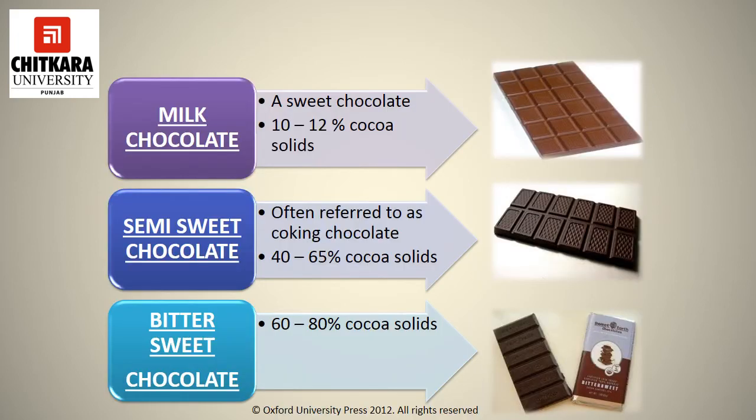Milk chocolate contains at least 12% milk solids and 10% chocolate liquor. The sweetest of the chocolates, it is also the most popular plain eating chocolate. Milk chocolate also contains lecithin, vanilla, and sugar. Bittersweet and semi-sweet chocolate both must contain at least 35% chocolate liquor. Sugar, added cocoa butter, lecithin, and vanilla are other typical ingredients. Strangely, there is no official distinction between the two — some assume bittersweet is less sweet than semi-sweet, but one company's semi-sweet may be less sweet than another's bittersweet.